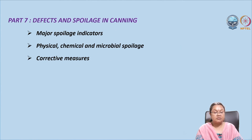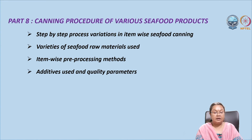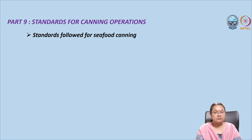In the seventh part, we will discuss spoilage indicators, the different kinds of spoilages seen in canning, and corrective measures to prevent them. In part eight, we will discuss item-wise seafood canning, covering each step individually, how the canning process changes from product to product, pre-processing methods to assure quality and longer shelf life, and the additives added to improve flavor, palatability, and shelf life.